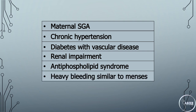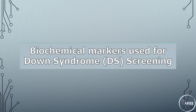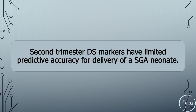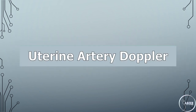Major risk factors also include pregnancy-associated plasma protein-A (PAPP-A) of less than 0.4 multiples of the median. Biochemical markers used for Down syndrome screening: second trimester Down syndrome markers have limited predictive accuracy for delivery of a SGA neonate. A low level of the first trimester marker PAPP-A should be considered a major risk factor for delivery of a SGA neonate.